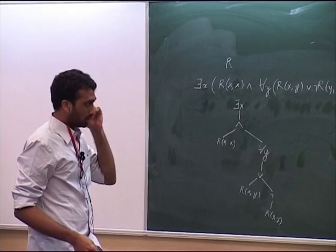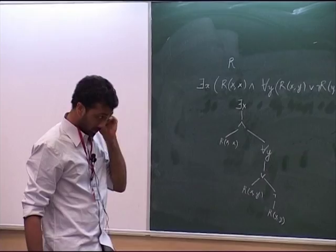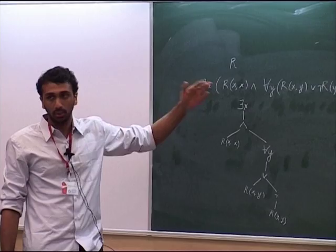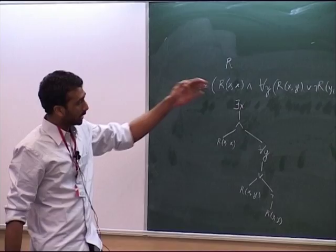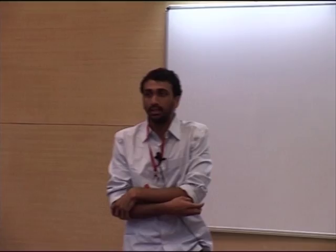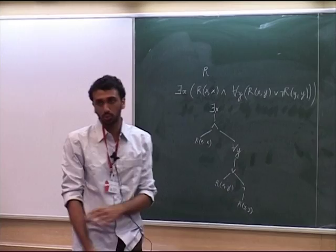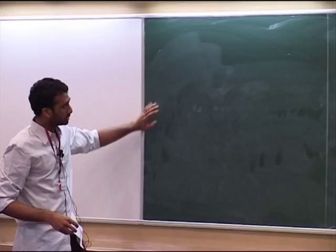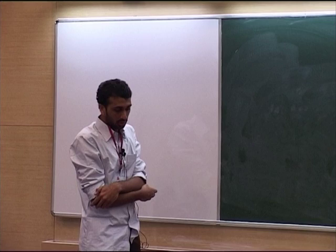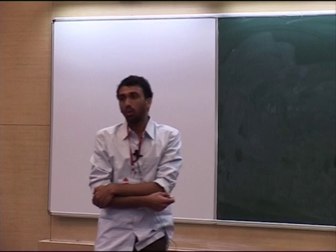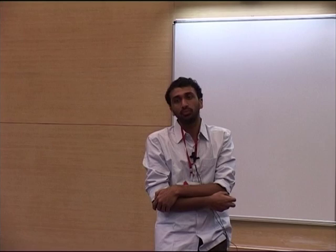We look at each path from the root to the leaf and find the number of quantifiers appearing along that path. The maximum number of quantifiers along any path from root to leaf is called the quantifier depth, nesting depth, or quantifier rank of the formula. In this example, one path has just one quantifier, whereas another path has two, so the maximum is two. Therefore the quantifier depth or quantifier rank of this formula is two. This notion will be useful later — I shall introduce the EF game between two structures and show how a game of n moves has a close connection to formulas of quantifier rank n.